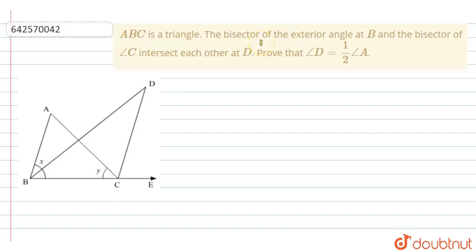The question says that ABC is a triangle. The bisector of the exterior angle at B and the bisector of angle C intersect each other at D. Prove that angle D is equal to half of angle A.